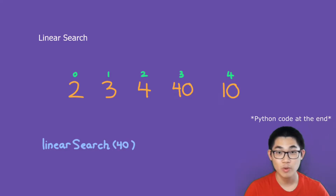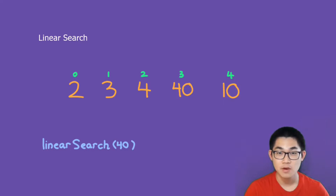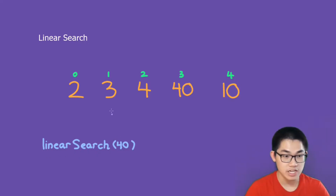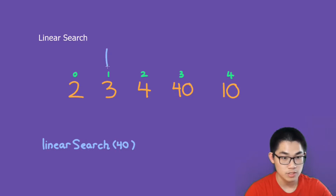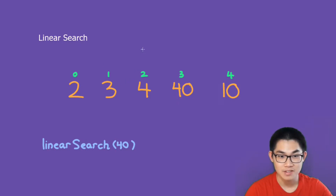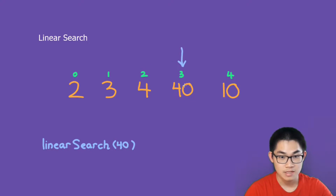We use linear search when we want to find something in an array or check if something exists in the array. For example, if we want to linear search the number 40, we look at the first number — is this number 40? No. So we move on. Is this number 40? No. How about this one? No. How about this one? Yes, we see that it is 40.